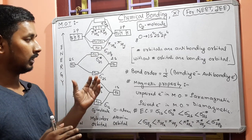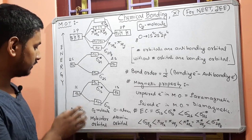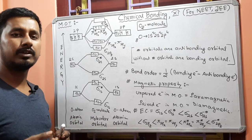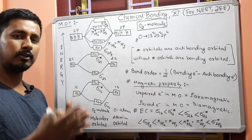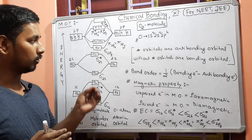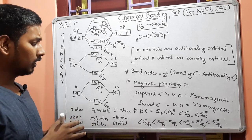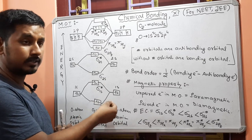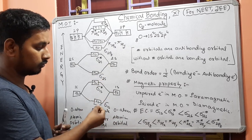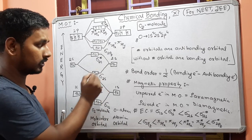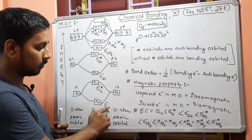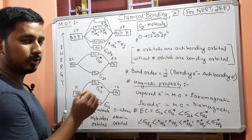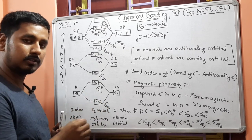Before understanding Molecular Orbital Theory, you have to know what is an atomic orbital and what is a molecular orbital. Atomic orbitals are like 1s, 2s, 2p. Similarly, in molecules, molecular orbitals also exist, represented as σ1s, σ1s*, σ2s, σ2s*, and so on. The star (*) means anti-bonding orbitals, and without star means bonding orbitals.